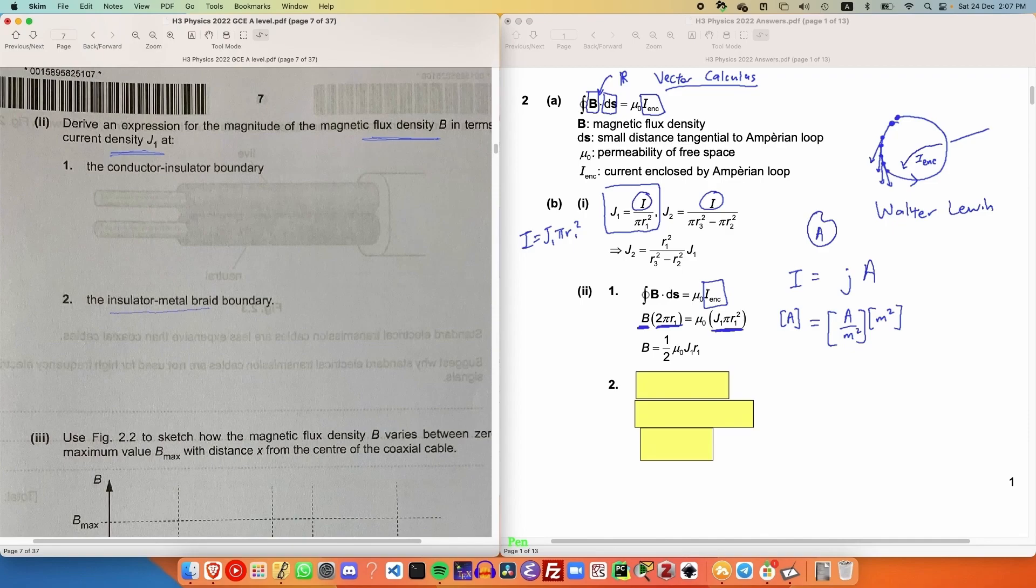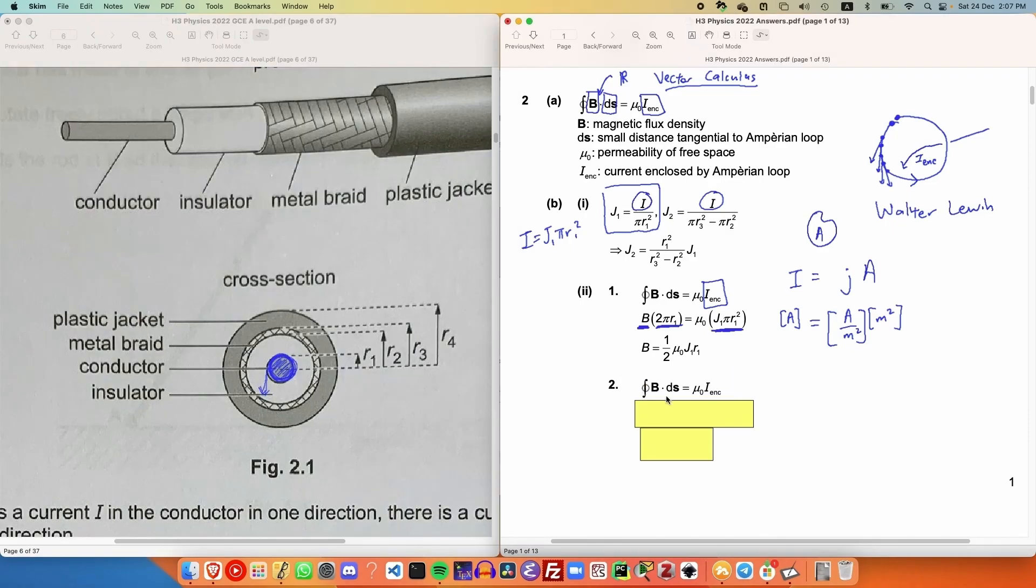Now, for the insulator and metal braid boundary, we are going to use Ampere's law as well, but this time, we're going to choose a different Ampere loop. In this case, we're going to choose the Ampere loop of radius R2. Once again, the magnetic field has constant magnitude along the Ampere loop, which allows us to collapse the line integral into just a multiplication, and the current enclosed is still J1 times pi R1 squared because there's only current flowing inside the conductor. There's zero current flowing inside the insulator, and that's why we use R1 over here instead of R2. Rearranging, we get an expression for B as well.